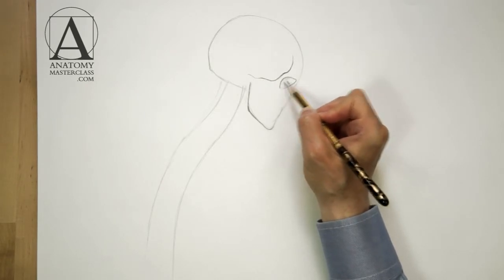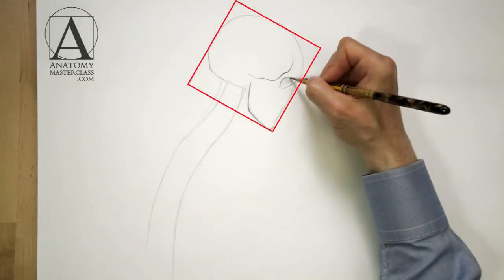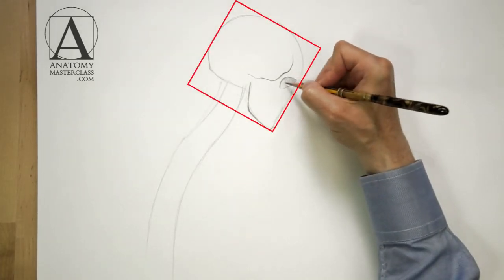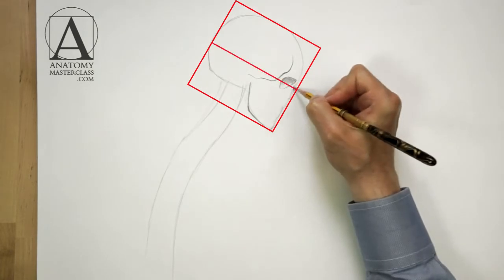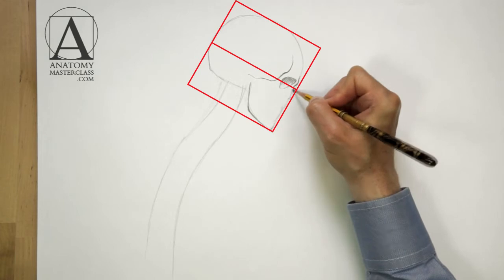We see the model's head in profile. From this point of view, the head can be inscribed by a square. By dividing the height of the skull in half, we can locate the position of the eye socket.